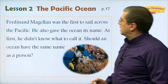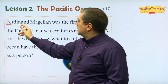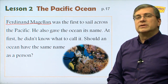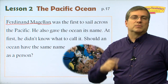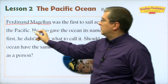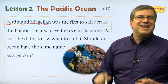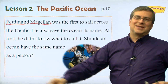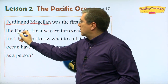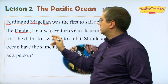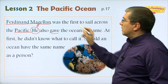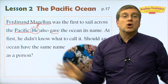Ferdinand Magellan — do you know who he is? Ferdinand Magellan was the first European to sail all the way across the Pacific Ocean. His ship sailed all around the world, though he died in the Philippines. His crew completed the journey. He was the first explorer to sail across the Pacific Ocean.